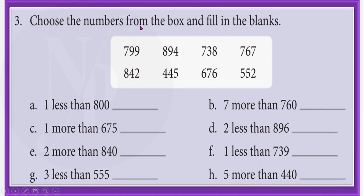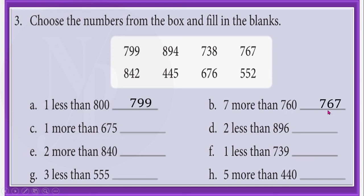Question number 3: Choose the numbers from the box and fill in the blanks. Some numbers are given in the box and fill-in-the-blank questions are given here. We should read these and choose the correct answer from the box and fill in these blanks. A: 1 less than 800. Dear children, which number do you get if you subtract 1 from 800? Yes, subtracting 1 from 800, you will get 799. In other words, 1 less than 800 is 799. B: 7 more than 760. More means you should add. If you add 7 to 760, you will get 767.